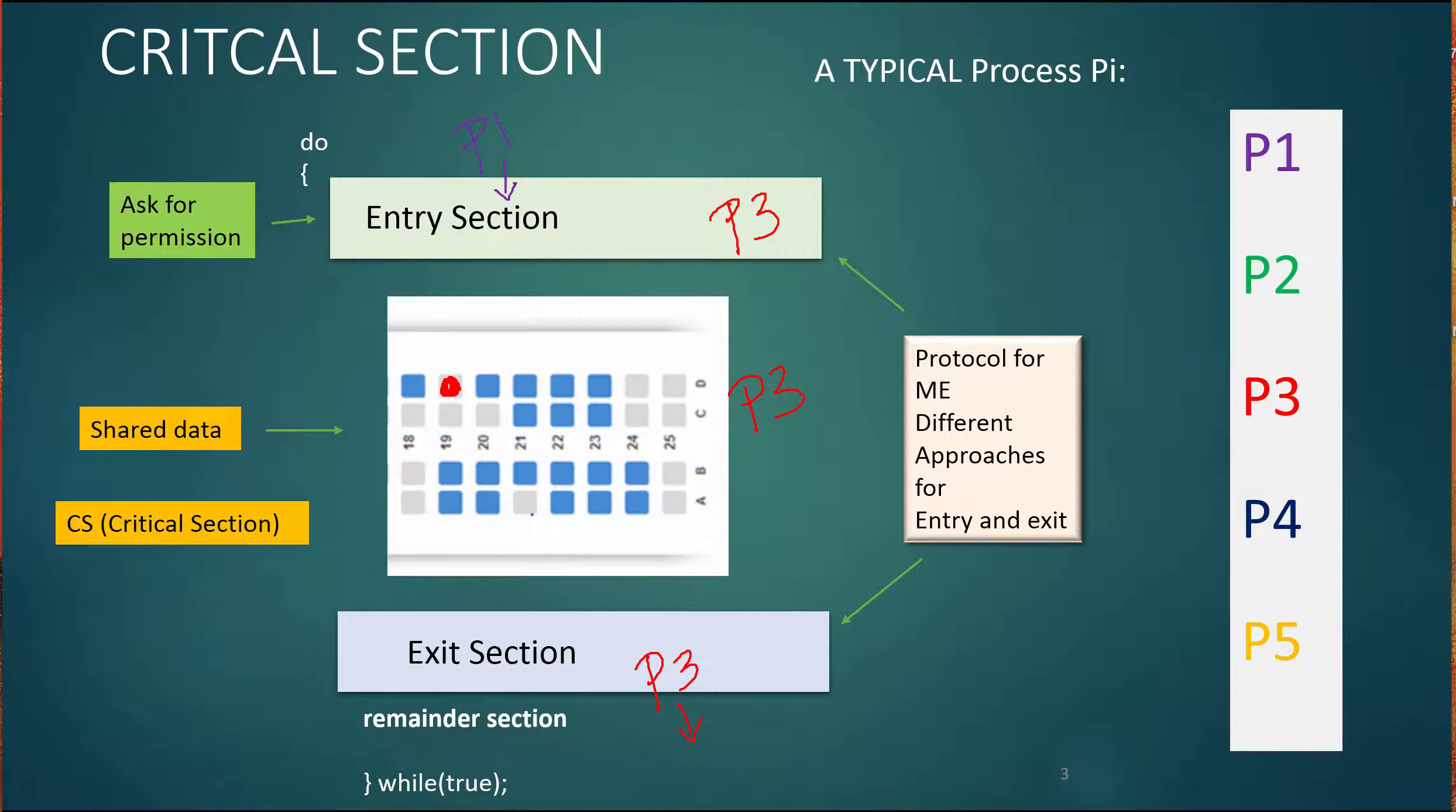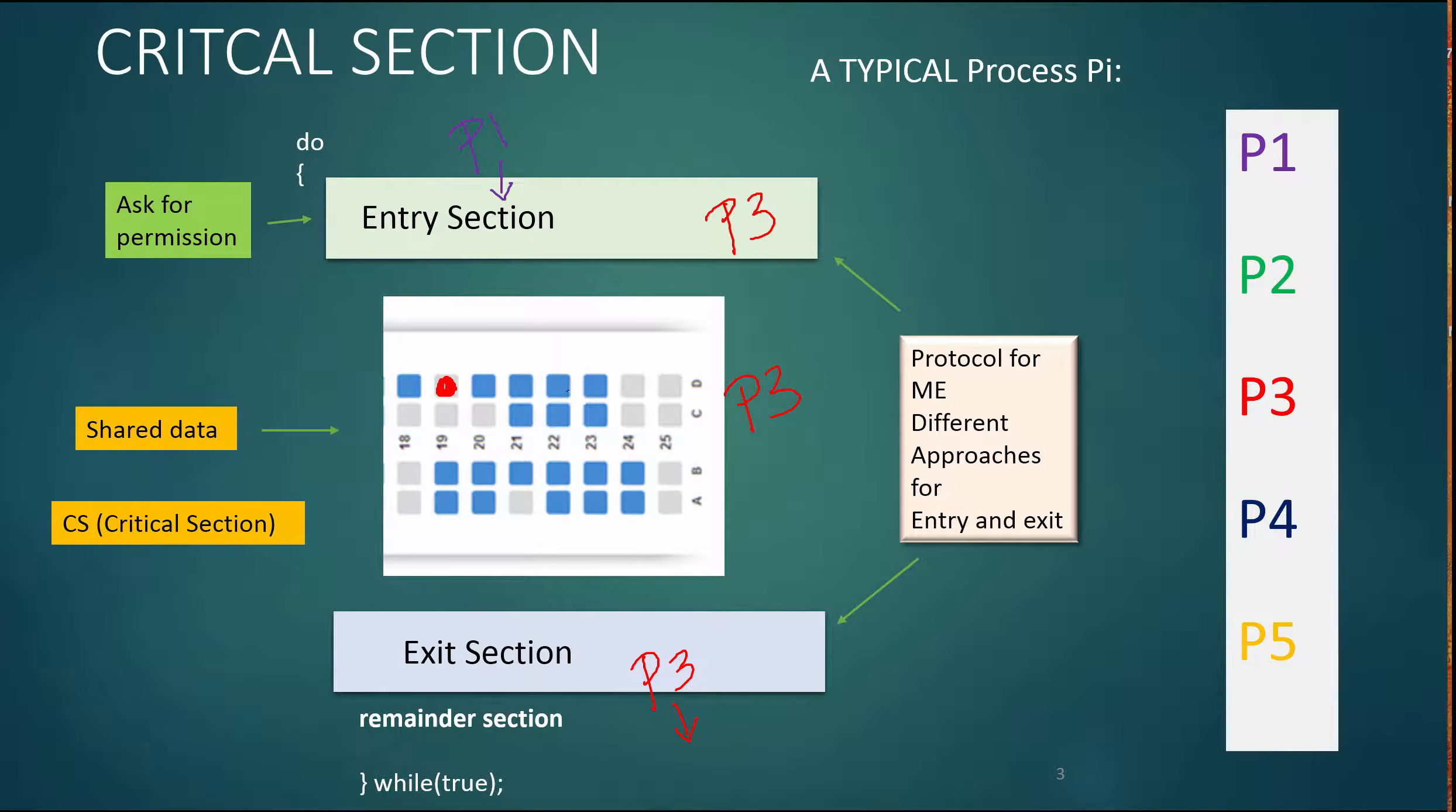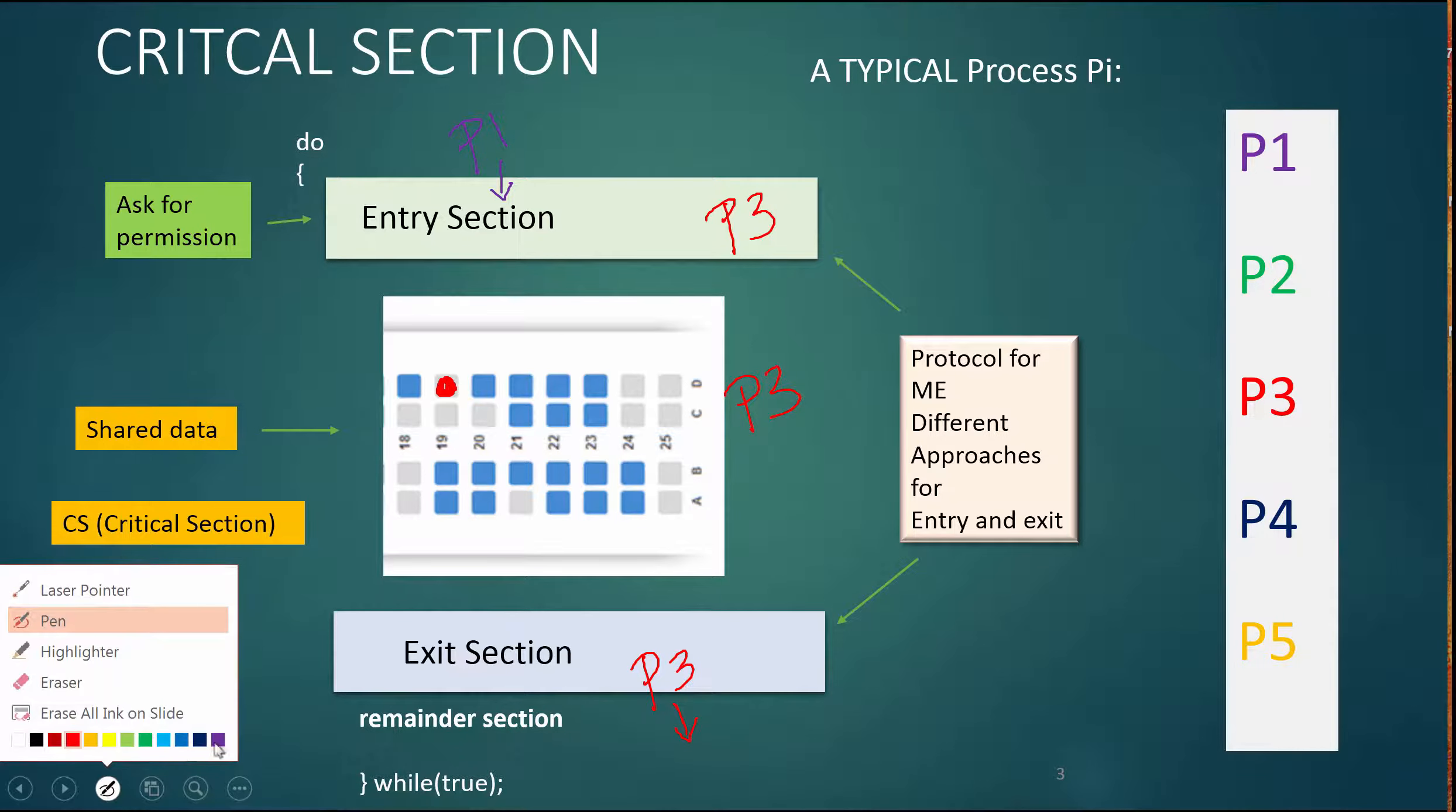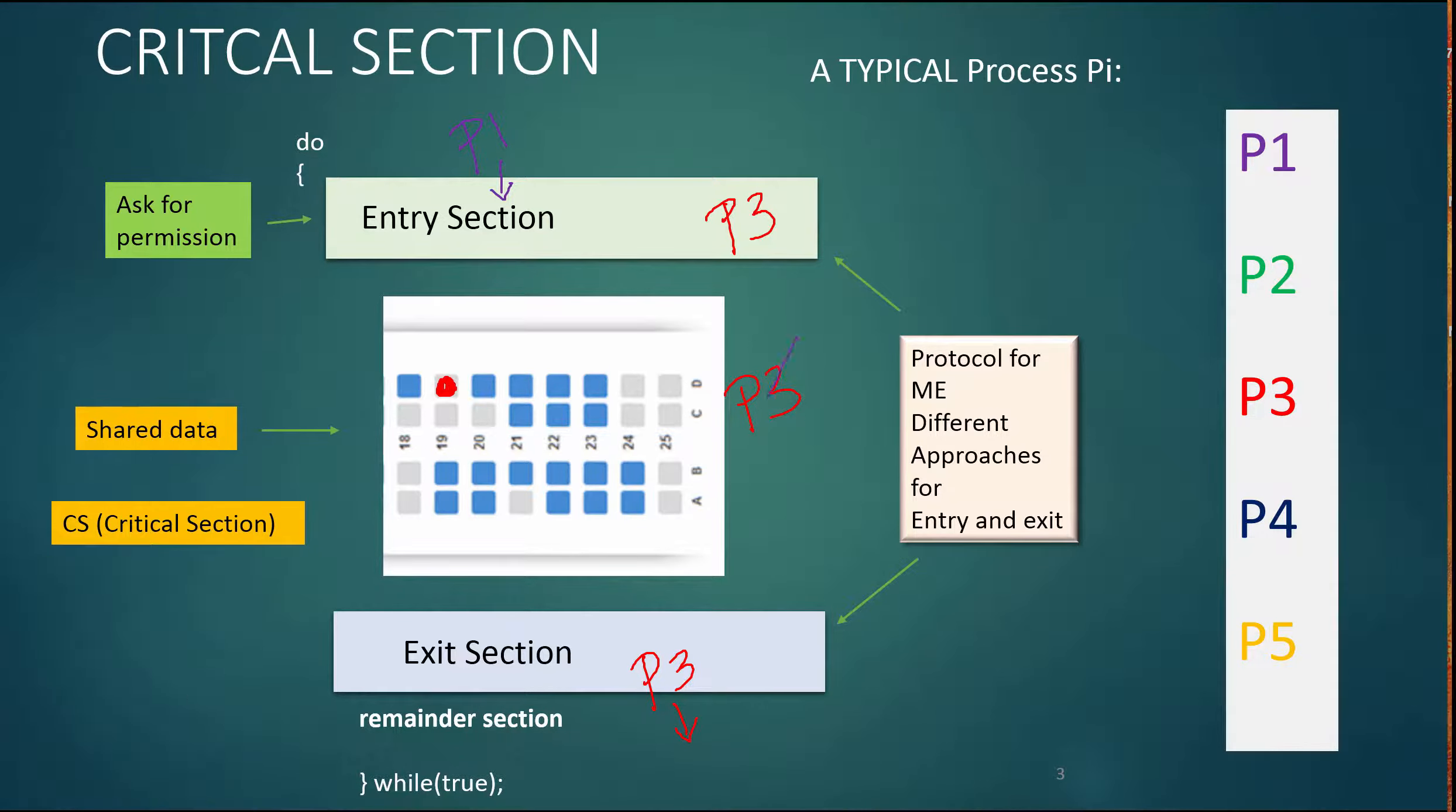And that would depend on a lot of different factors, whether you have those processes who are waiting to enter if they are busy waiting. So then that would be the next one that checks, or they might be blocked and queue up. So even if now P3 is done and has exited, so now we're going to have P1 in there. So P1 will go in there and check and P3 is done and P3 is exited.